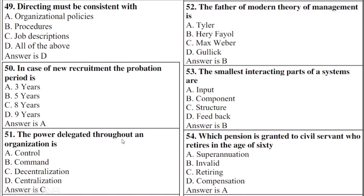Authority delegated throughout the organization is — right option is C: decentralization. The father of modern theory of management is — right option is B: Henry Fayol. Question 53: The smallest interacting parts of a system are — right option is B: component.